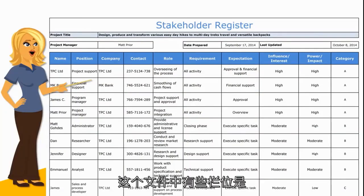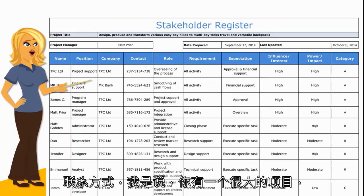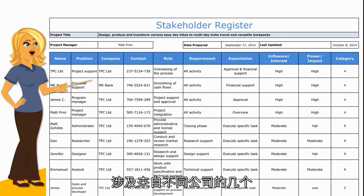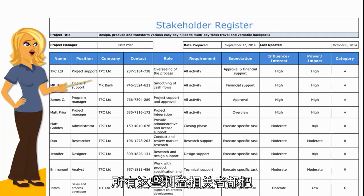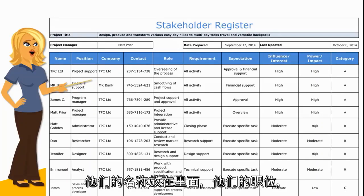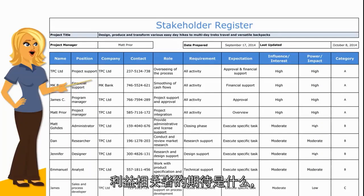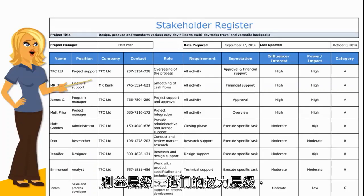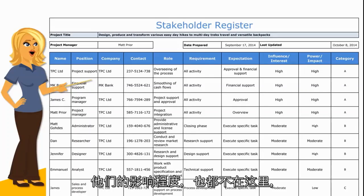Now, some of the fields in this document are the name, the position, the company, the contact. You've got a big project with several different stakeholders from different companies — you want to keep a handle on all these stakeholders. Put their names in there, their role, what exactly they're doing, what the expectations of these stakeholders are, what their requirements are, their level of interest, their level of power, their level of impact.